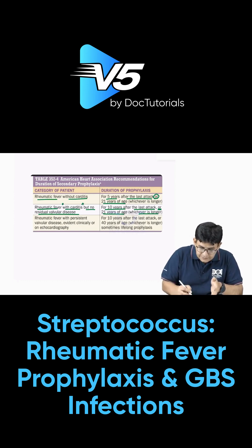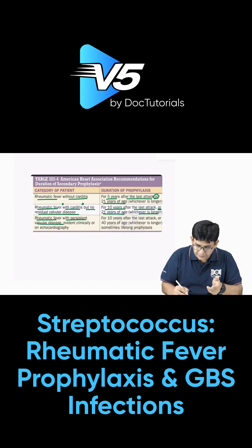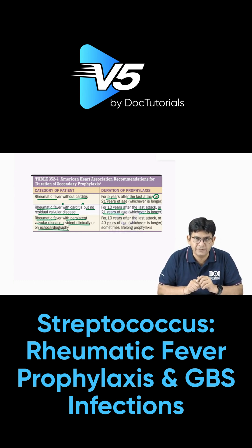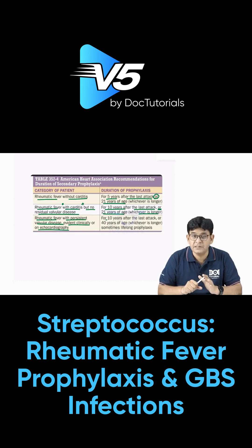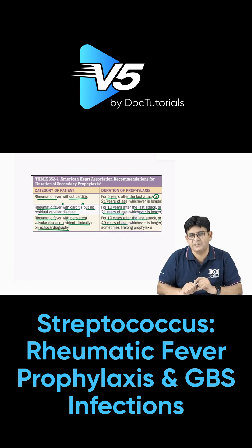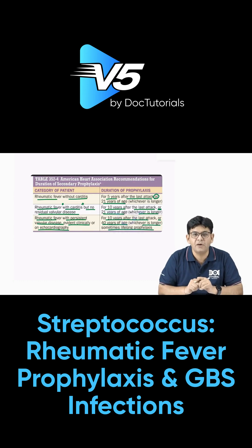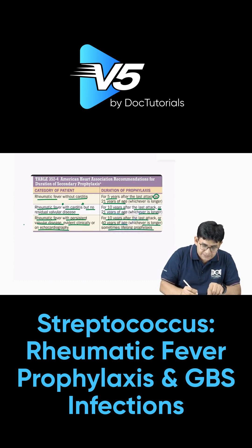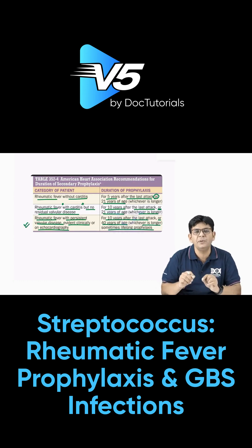For rheumatic fever with persistent valvular disease, evident clinically or on echocardiography, the duration is 10 years after the last attack or 40 years of age, whichever is longer. Sometimes lifelong prophylaxis is needed in this particular case.